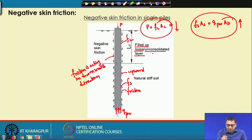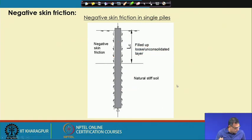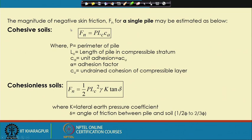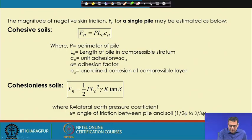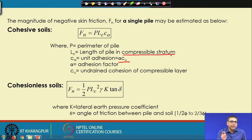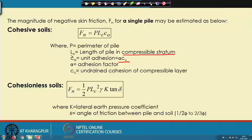In that case we cannot consider this friction as the frictional resistance of the pile, because it will act as a negative effect in terms of bearing capacity. For cohesive soil, we can calculate the negative skin friction the same way we calculated the skin friction of the pile. Here c_a is the unit adhesion, equal to alpha times c_u, and l_c is the length of the pile in the compressible strata — that means up to the depth of the loose sand or unconsolidated layer. Only that portion length is l_c.